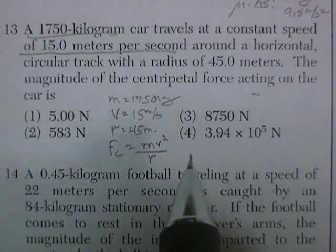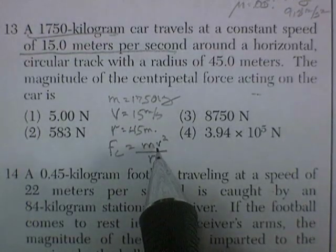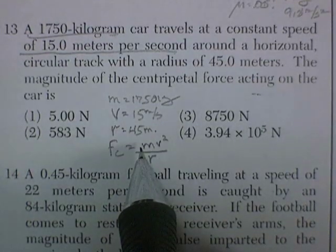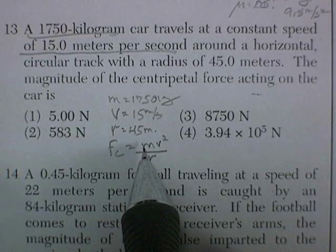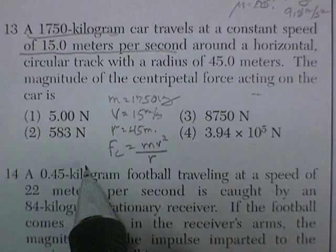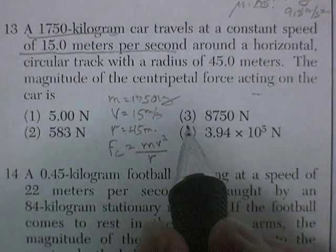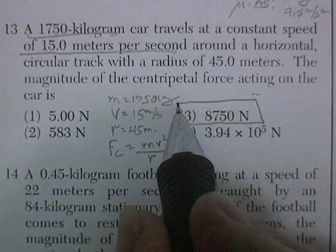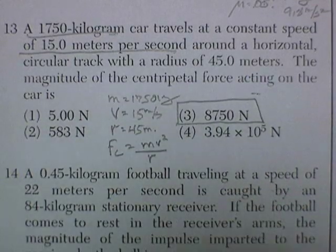Calculator time. You plug it in — don't forget to square the V. Multiply it by 1750 and divide by 45. And I think this is the number that will appear on the screen.